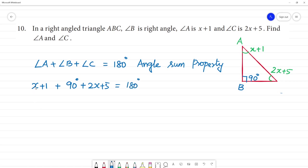Now x plus 2x is 3x. Plus, this is 1 plus 90, 91. 91 plus 5 is 96.